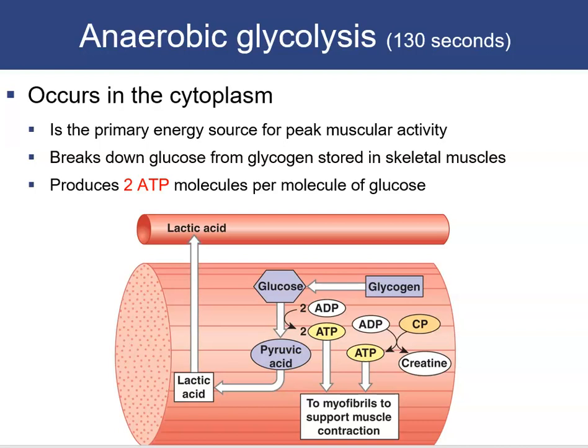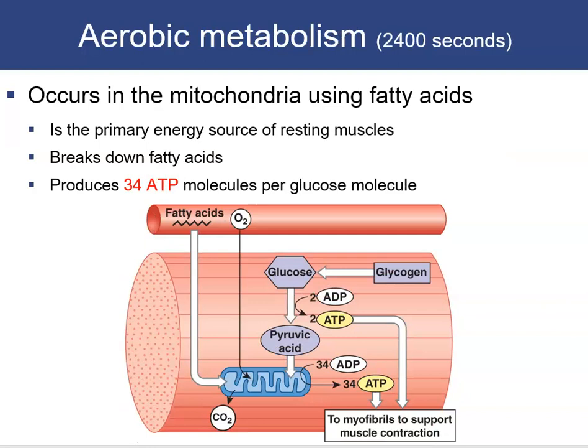The second source is anaerobic glycolysis, lasting about 130 seconds. This occurs in the cytoplasm and is the main energy source for peak muscular activity. It breaks down glucose from glycogen stored in skeletal muscles, but only produces 2 ATP per glucose molecule. The third source is aerobic metabolism in the mitochondria, lasting roughly 40 minutes. It primarily uses fatty acids but can also break down glucose, yielding 34 ATP per glucose.